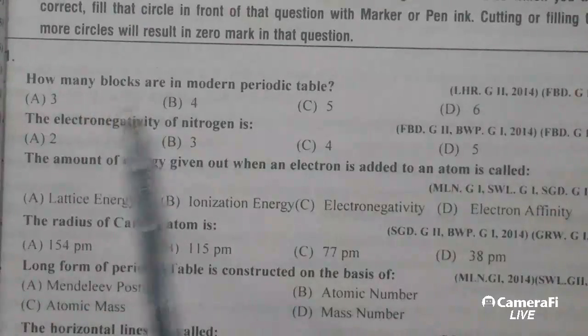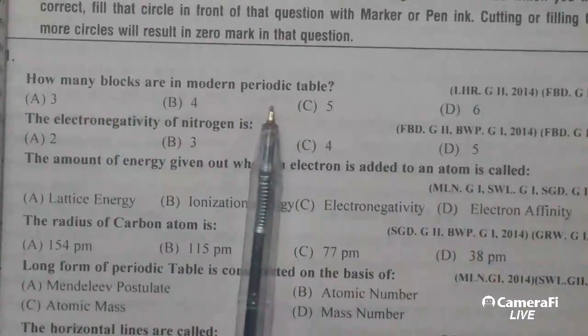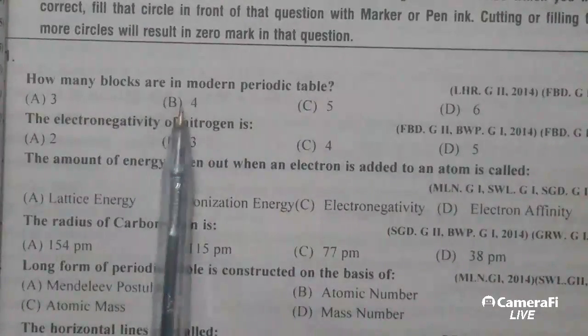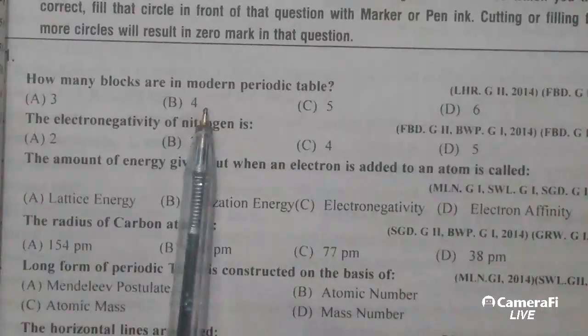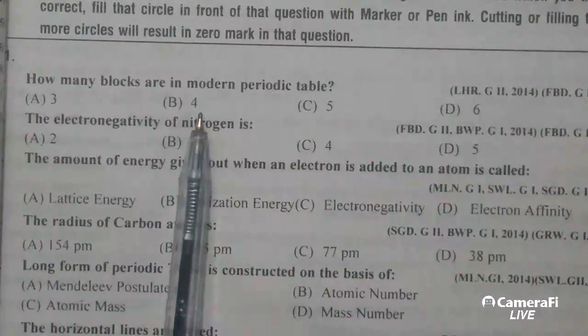How many blocks are in modern periodic table? Modern periodic table میں کتنے blocks ہوتے ہیں. 4 blocks: S, P, D, and F block.